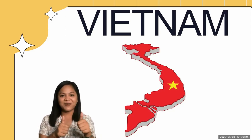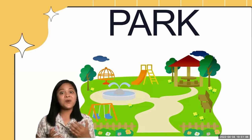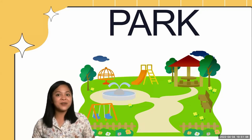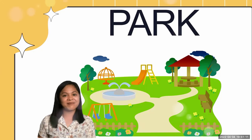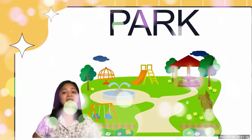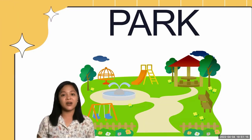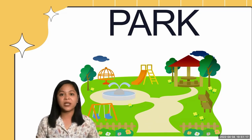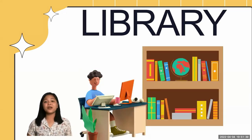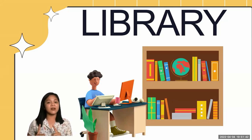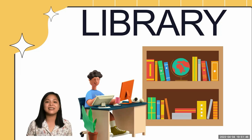All right! We also have — what is this place? It is a park where we usually play. Another one is the library. Can you say library? All right!